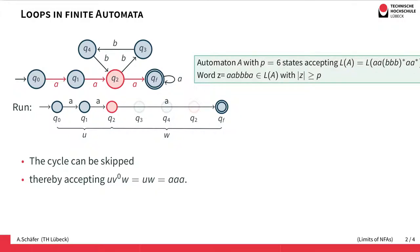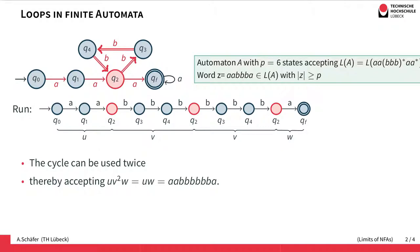If there is a cycle we can simply skip it — not going through the cycle gives an accepting run for the word u·v⁰·w, so just two A's, and this run is still accepting. Alternatively, we can go through the cycle twice or more times, thereby accepting a word of the form u·v²·w or higher powers, giving us more B's inside by going through the loop more than once.